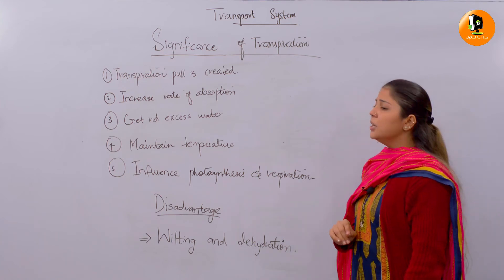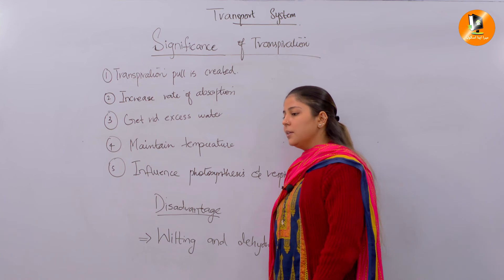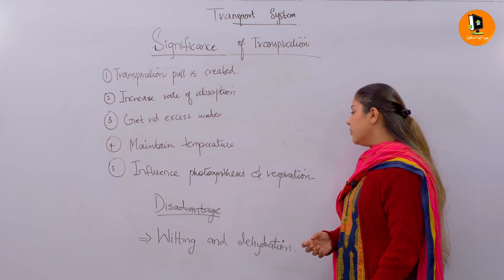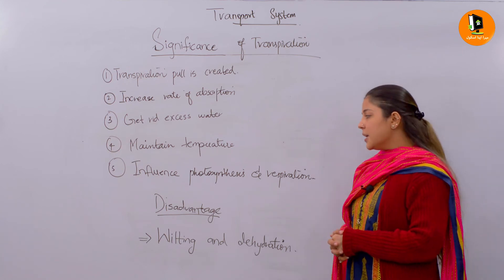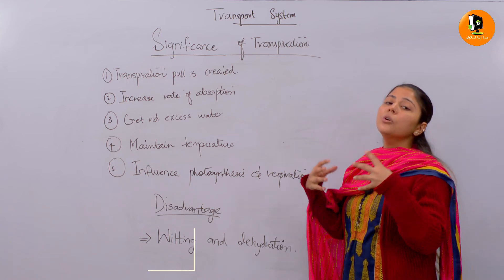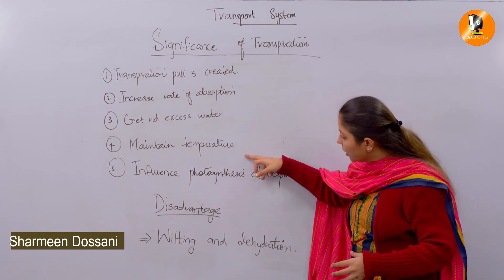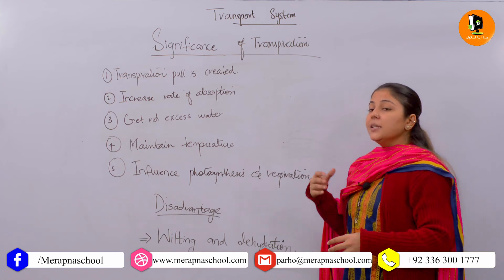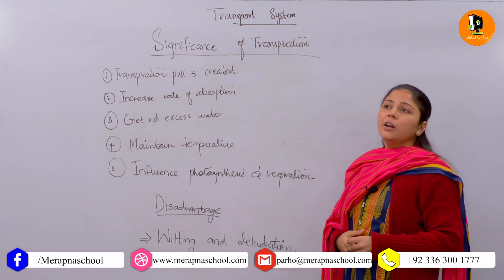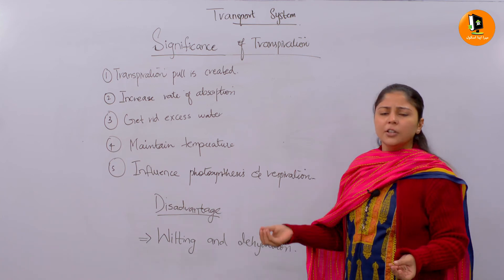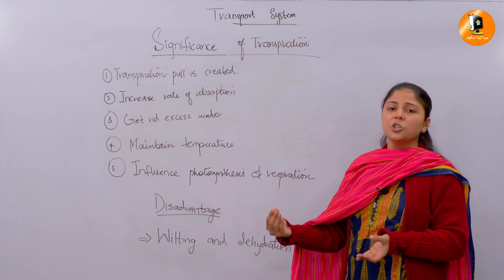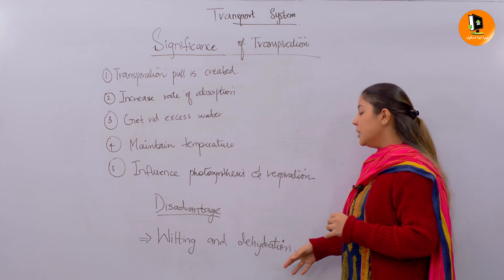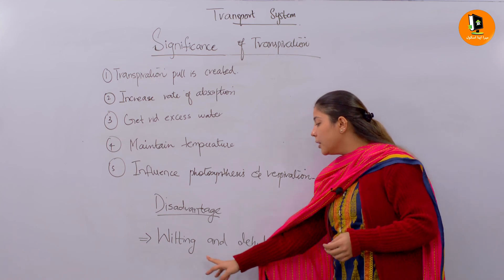Now, talking about the importance and why transpiration is needed in the plant body, there is also a drawback — a disadvantage of transpiration. When there is more and more transpiration, consider xerophytic plants or desert plants: they have very low concentrations of water molecules, so they have adaptations that stop or limit transpiration. Excess transpiration is a drawback.